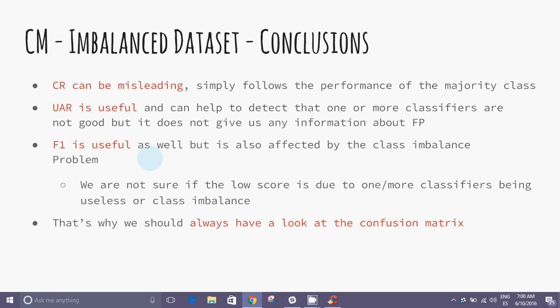We arrive at the next conclusions. Classification rate can be misleading; it simply follows the performance of the majority class. UAR is useful and can help to detect that one or more classifiers are not good, but it does not give us any information about false positives. F1 is useful as well, but it is also affected by the class imbalance problems. We are not sure if the low score is due to one or more classifiers being useless or class imbalance. That is why you should always have a look at the confusion matrix.